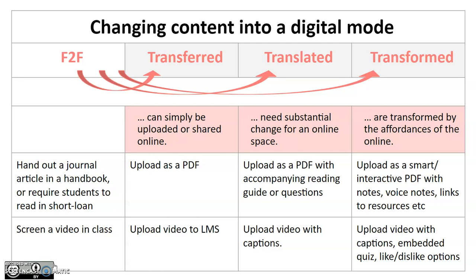In an ideal world, you'd be looking to achieve all the learning outcomes outlined by your course in an online mode in such a way that the activities were transformed. However, we are in a far from ideal world, with constraints on students, systems, and ourselves. So instead of looking to transform courses through the affordance of the digital, in the context of Corona and COVID-19, we're looking for minimum viable products. If you can transfer something, transfer it. If it makes sense and would work well, you must translate it, then translate it. If you have capacity after that to worry about transforming activities, that would be amazing — but that is by no means the standard we are demanding or setting here.